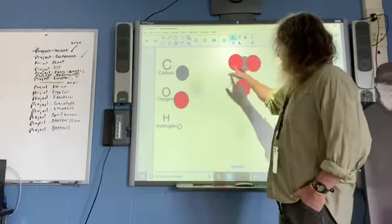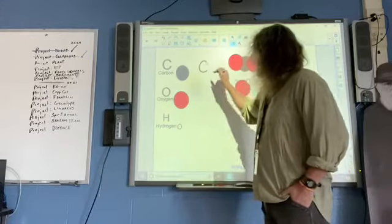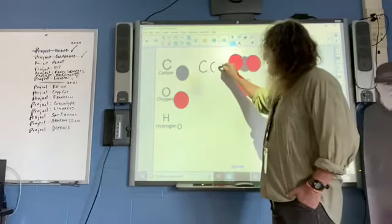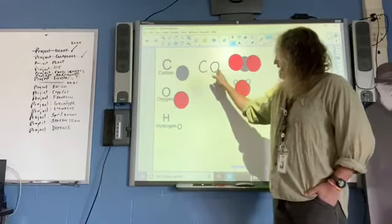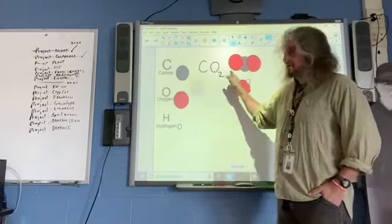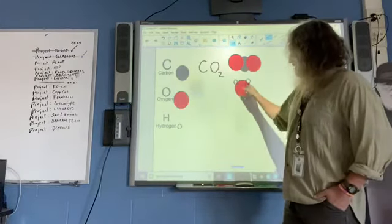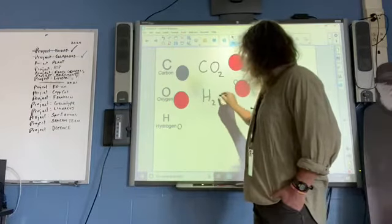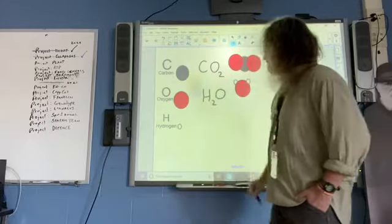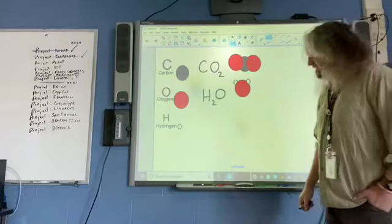This molecule right here has one C, one black C, and two oxygens. We call that molecule carbon dioxide, CO2. One C, two O's. This one right here, it's got one O and two H's. We call that H2O. That's how it is.